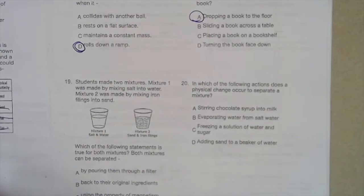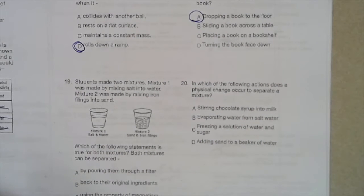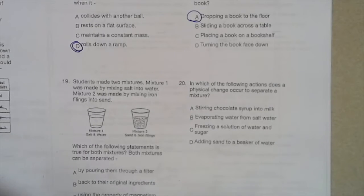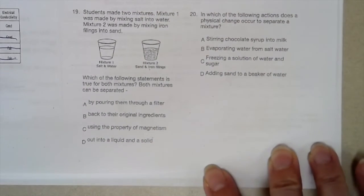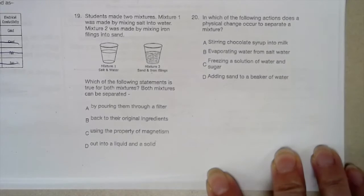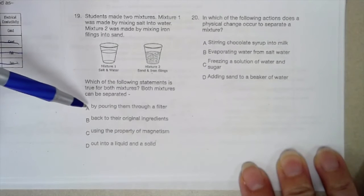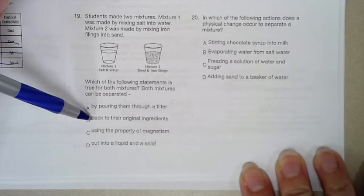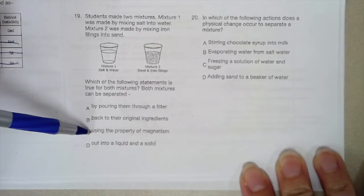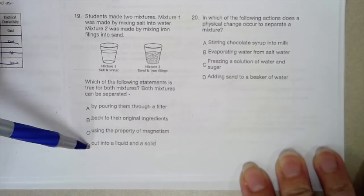Number 19. Students made two mixtures. Mixture 1 was made by mixing salt into water. Mixture 2 was made by mixing iron filings into sand. Which of the following statements is true for both mixtures? Both mixtures can be separated by pouring them through a filter, back to their original ingredients, using the property of magnetism, out into a liquid and a solid.